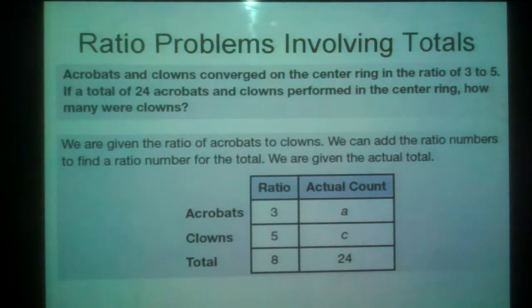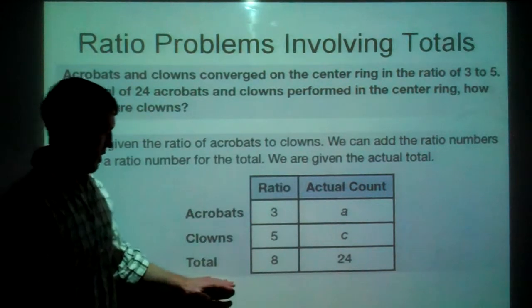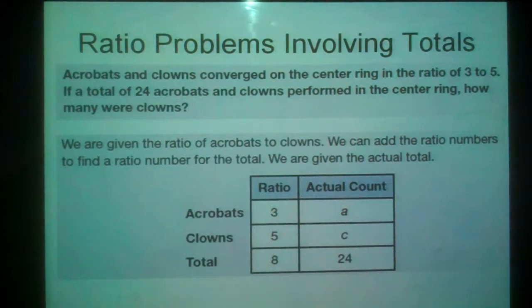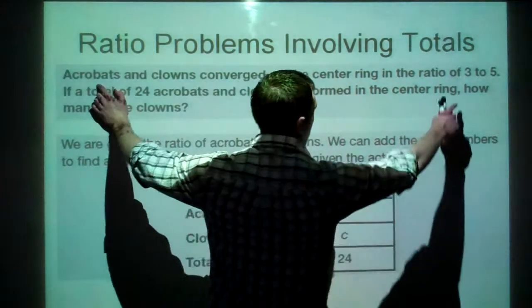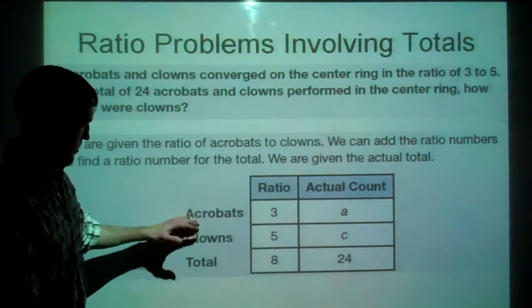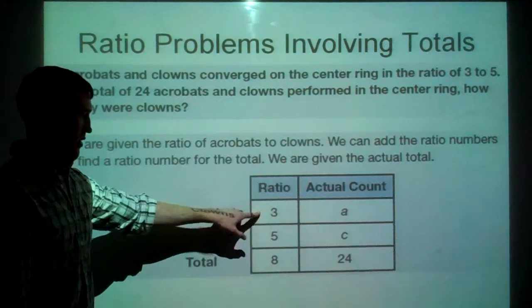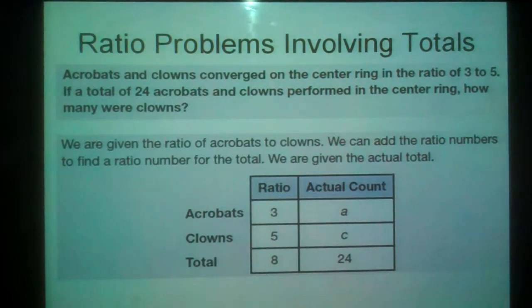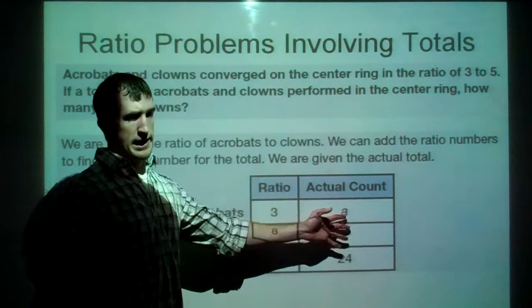Now here's what our table is going to look like. Notice the only difference between this table and the one I made before is that now we have a total row. So what we do is we set up things like we did last time. Acrobats to clowns, so 3 to 5. 3 to 5 in acrobats to clowns for our ratio. And all they do to get a total for the ratio column is add 3 plus 5 and you get 8. And we can actually use that total and relate it to the actual total. Just like we can relate each part of the ratio to the actual amounts of acrobats or clowns.